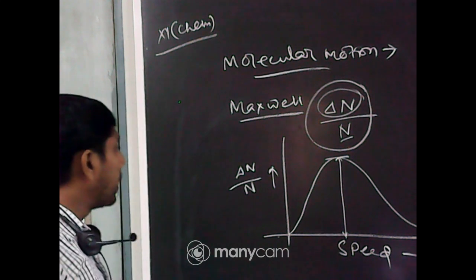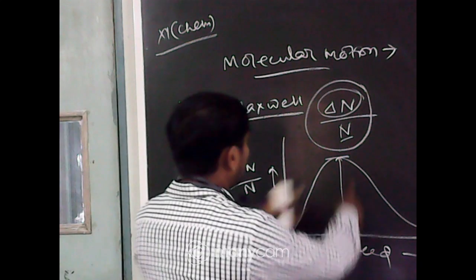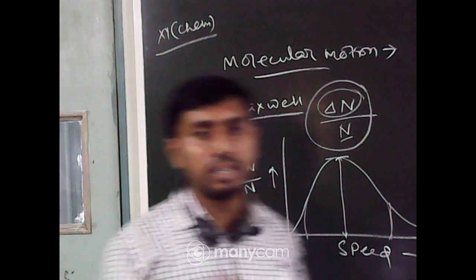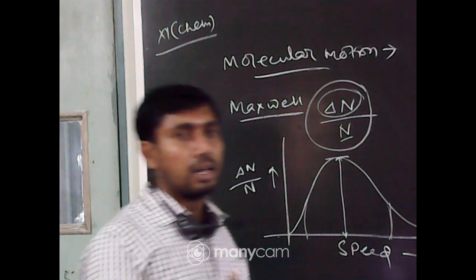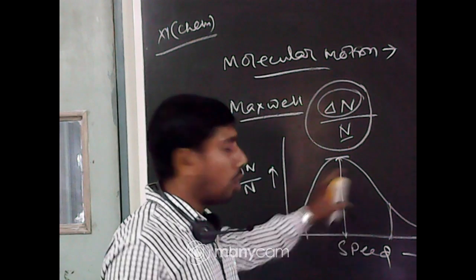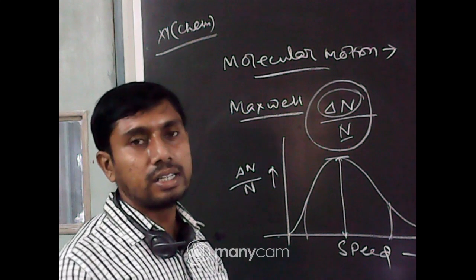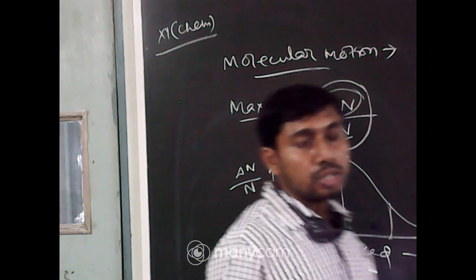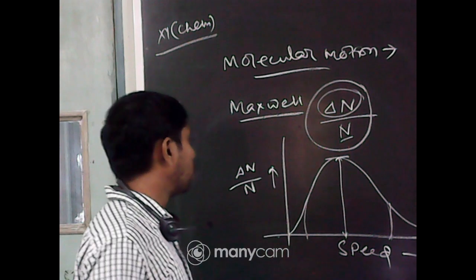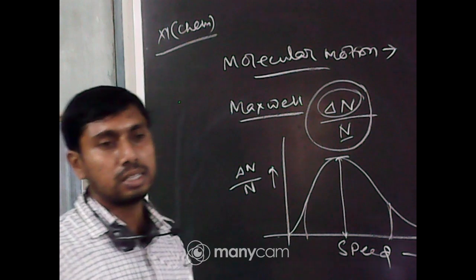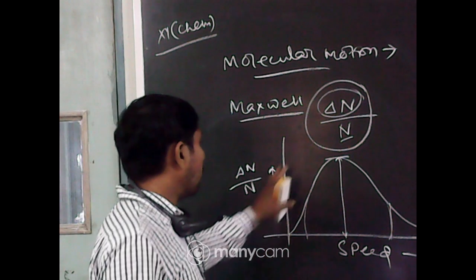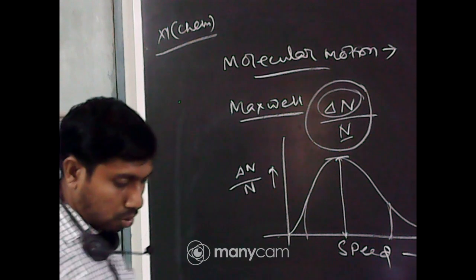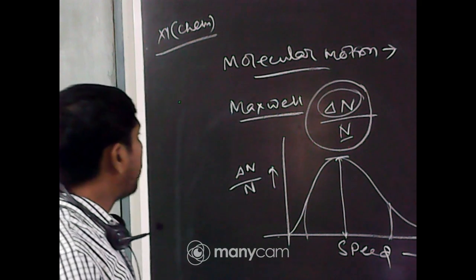The Maxwell distribution depends on temperature. The area under the curve is fixed at a certain temperature. If temperature increases, velocities change and the area also changes, because with increasing temperature the kinetic energy of gas molecules increases. So we get a deviation in that curve; the average velocities of a particular fraction of molecules largely depend on temperature.